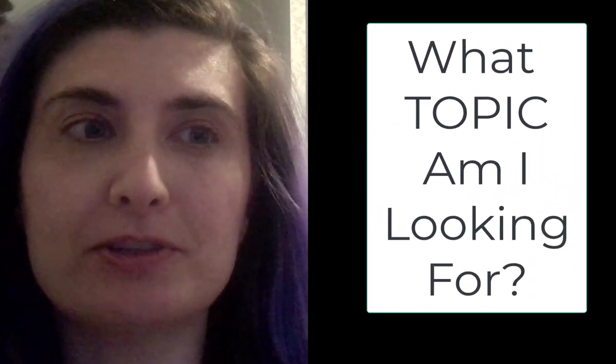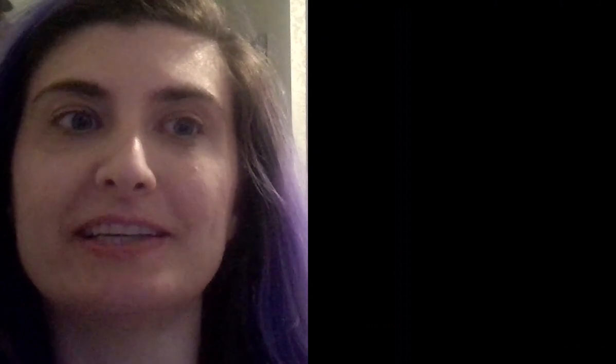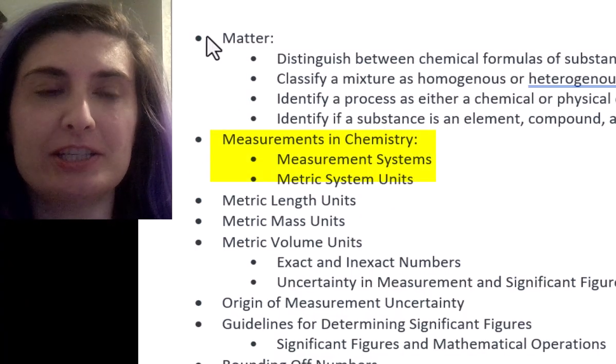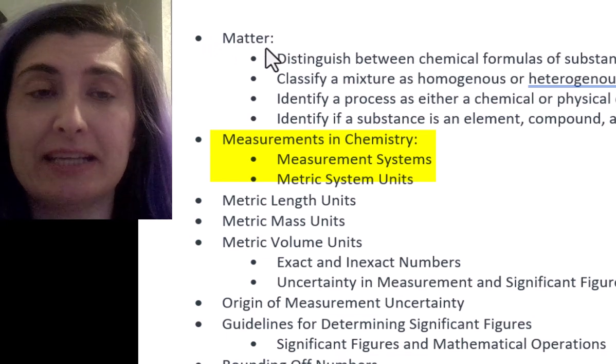To use the table of contents, start by identifying the general topic or chapter listed in your class topic list. I'm going to search for measurements and specifically information about using the metric system in chemistry.